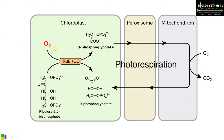RuBP combines with oxygen via Rubisco's oxygenase activity, forming 2-phosphoglycolate and 3-phosphoglycerate. To regenerate 2-phosphoglycolate back to the Calvin cycle, it must pass through three organelles — peroxisome and mitochondrion — also releasing carbon dioxide. This can be remembered easily by CPM: the organelles involved in photorespiration are Chloroplast, Peroxisome, and Mitochondrion.